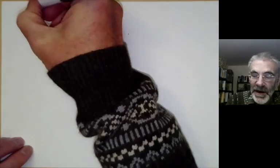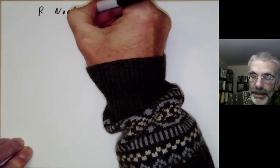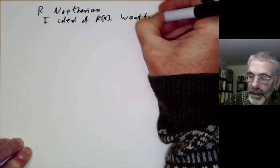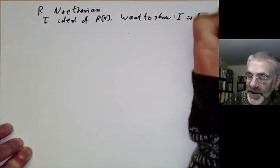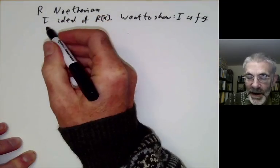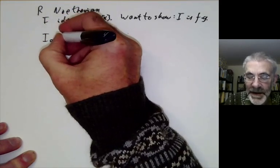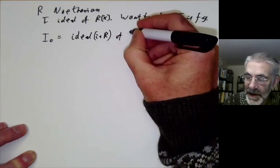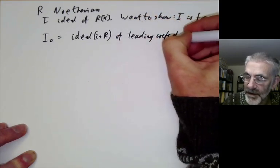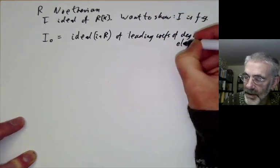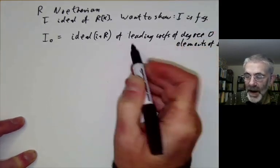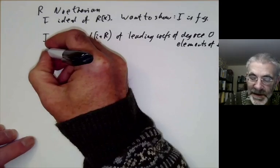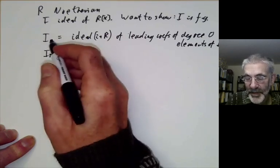Suppose R is Noetherian and I is an ideal of R[x]. We want to show that I is finitely generated as an ideal. To do this, we first write down a sequence of ideals of R. The ideal I₀ is the ideal in R — not in R[x] — of leading coefficients of degree zero elements of I. This is a somewhat cumbersome way of saying the elements of I that are in R, but this formulation generalises better to higher subscripts.